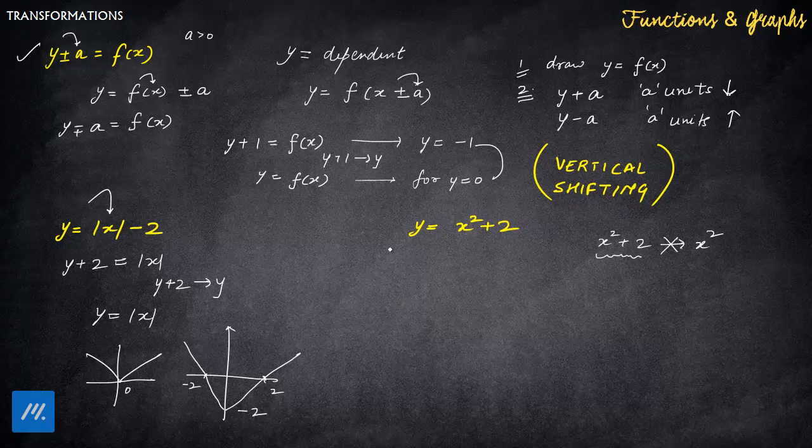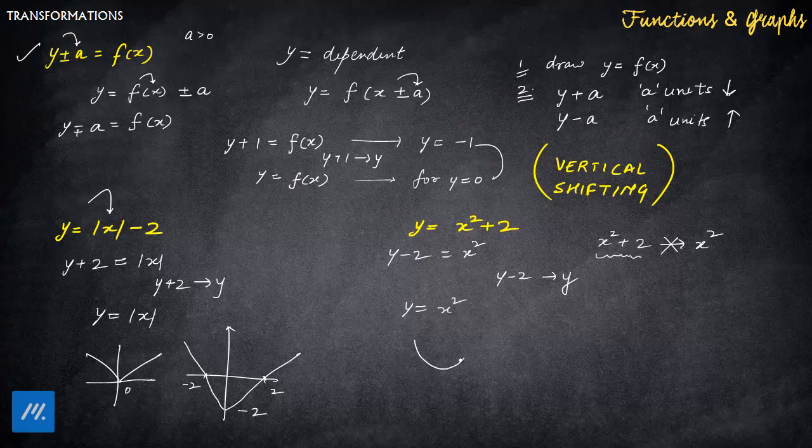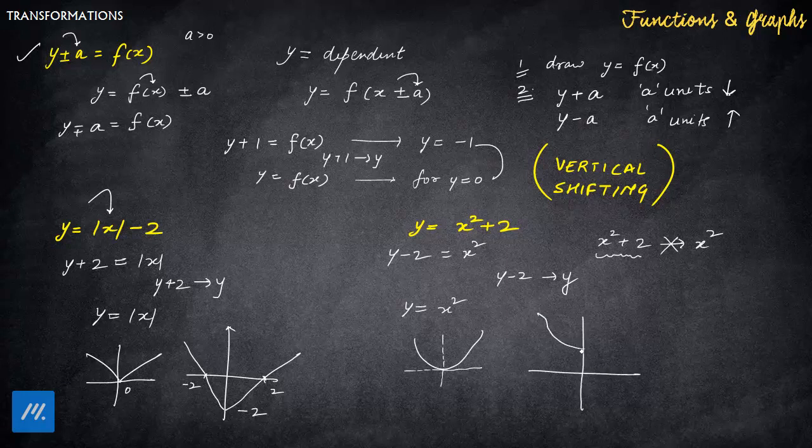So you cannot do this, so what you can do is y - 2, you can shift this here, now you know that you can linearly change y, or you can say the dependent variable. Now you can write y = x², very simply, we know that y = x² is something like this. So this is the shape, and now you want y - 2, y - 2 effect will be, the same graph will be drawn, but will be shifted 2 units upward. So this will be the graph, the shape will remain same, but you will shift the graph 2 units upward.